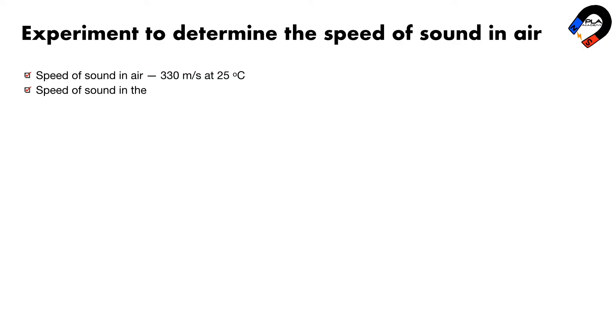An experiment to determine the speed of sound in air. The speed of sound in air is approximately 330 meters per second at 25 Celsius. Speed of sound in the hot air is faster than in the cold air. This is because the air particles in hot air have higher speed than the cold air. So, the speed of sound in air varies from 330 to 350 meters per second.